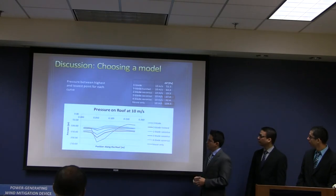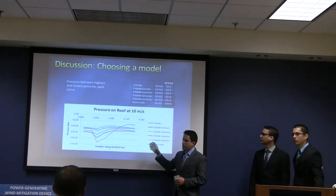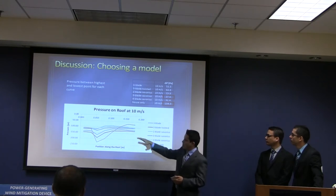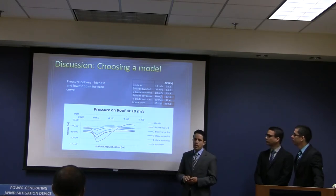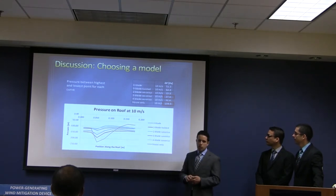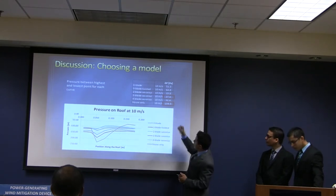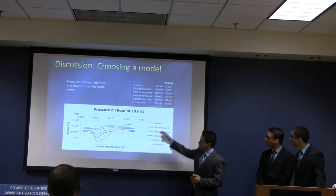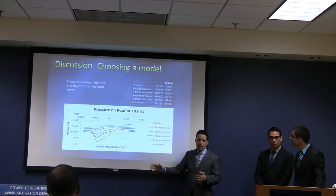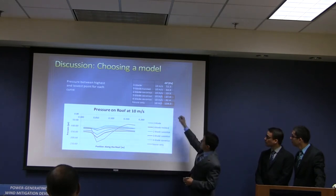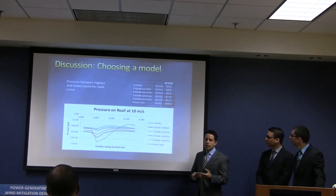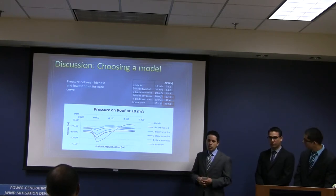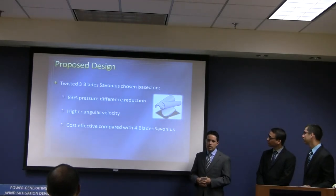When we put all the results together, these are all the lines from the experiment. The curve that goes all the way down is the house by itself. You can see that all devices are mitigating the wind and smoothing out the pressure distribution along the roof. Looking at this chart, the numbers at the bottom show the pressure difference between the highest and lowest point for the house by itself.